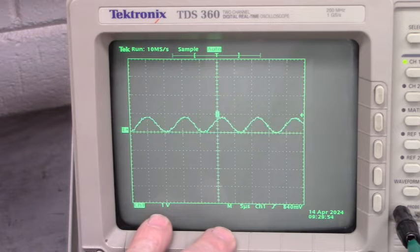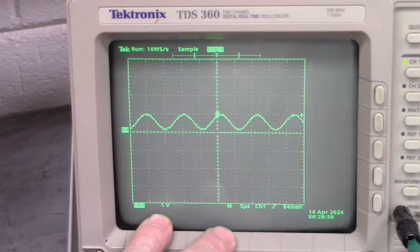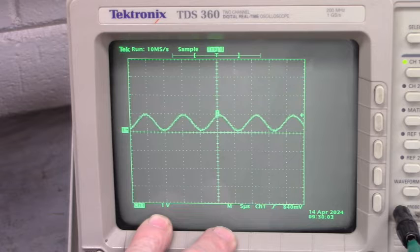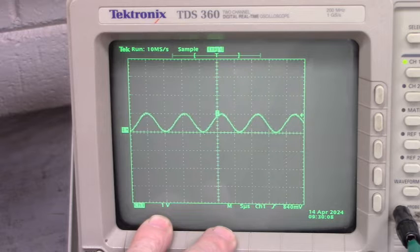Alright. Let me move this up just a little bit. Our scope is set to 1 volt per division. Okay. Right there. I am going to increase the amplitude just a little bit.